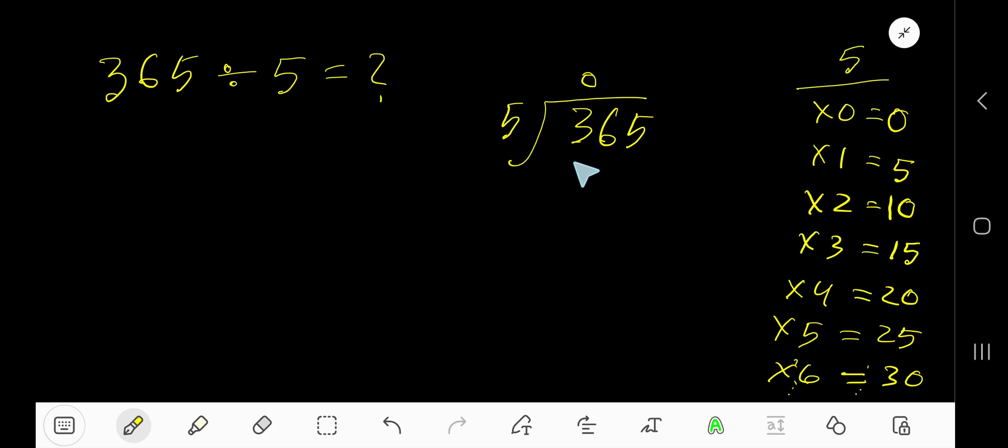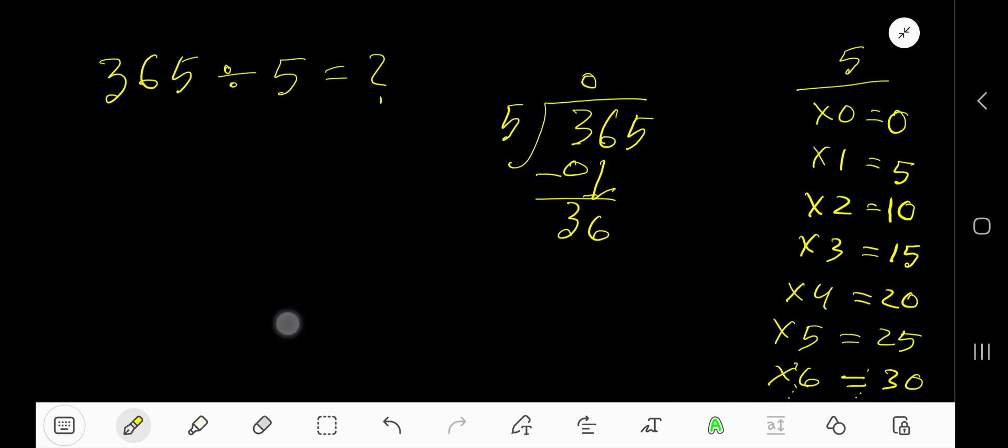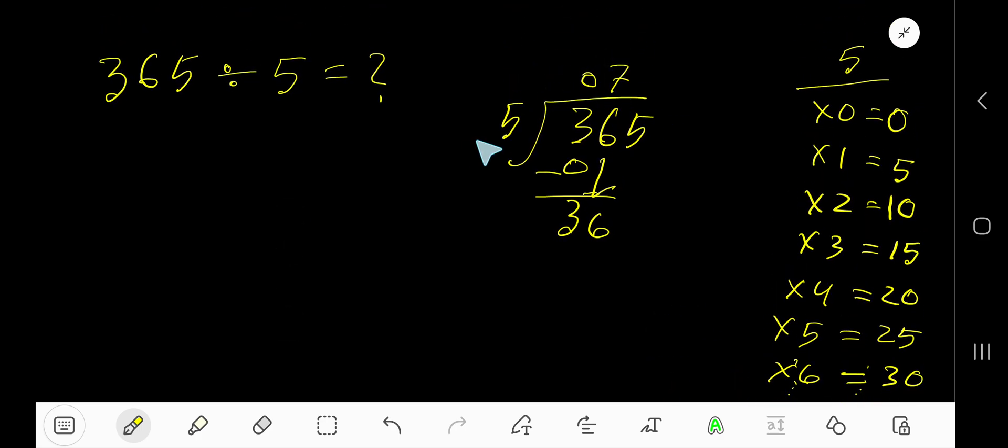0 times 5 is 0. Subtract, you get 3. Bring down the next digit. 5 goes into 36 how many times? 5 times 8 is 40, which is greater, so we have to take 7 times. 7 times 5 is 35.